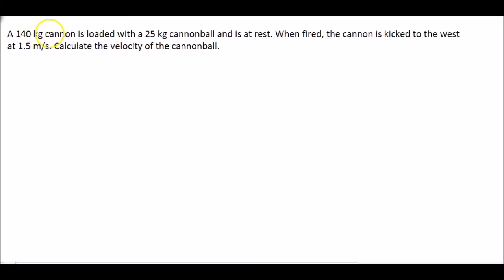We have a 140 kilogram cannon loaded with a 25 kilogram cannonball and they're both sitting together at rest. When fired, the cannon is kicked out to the west at 1.5 meters per second. We need to calculate the velocity of the cannonball.